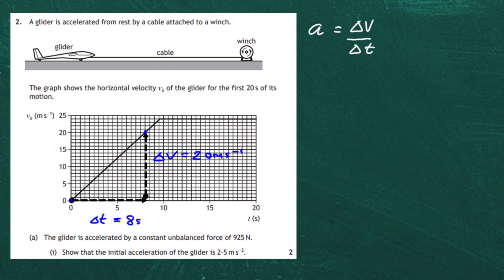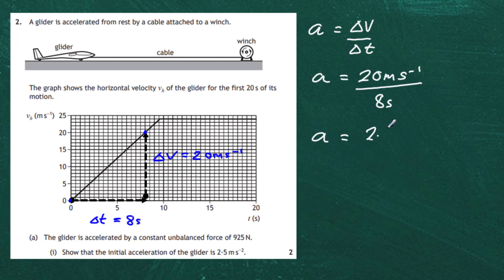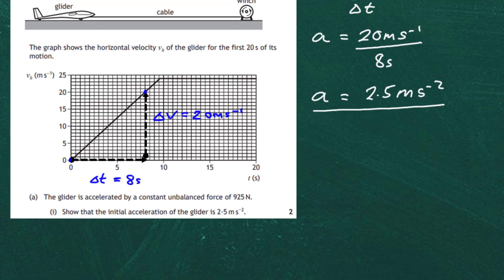We plug those values into our equation: acceleration equals delta v divided by delta t, so 20 meters per second divided by 8 seconds, giving 2.5 meters per second every second. That means every second the horizontal velocity increases by 2.5 m/s. Alternatively, you could use a equals (v_final minus v_initial) divided by t.